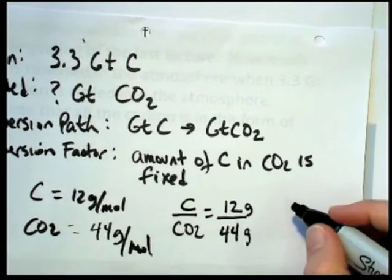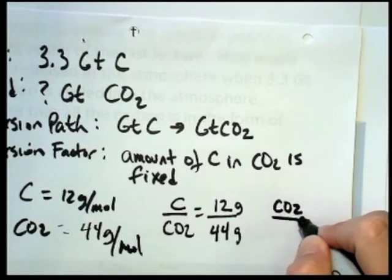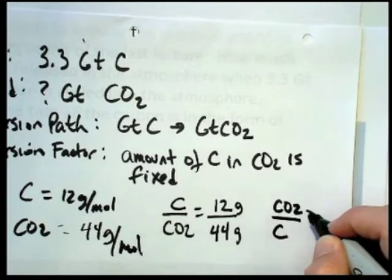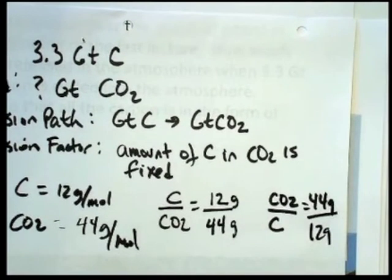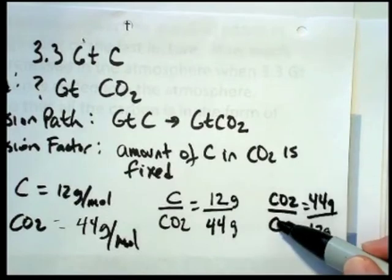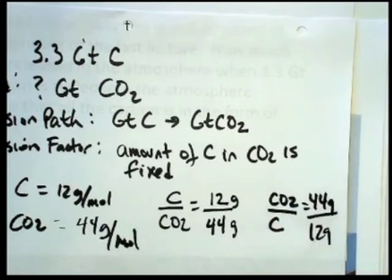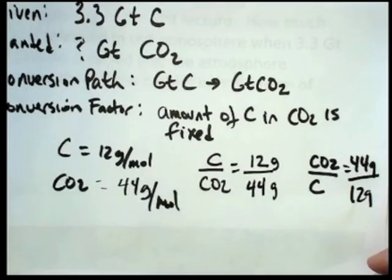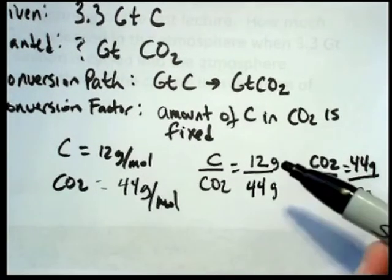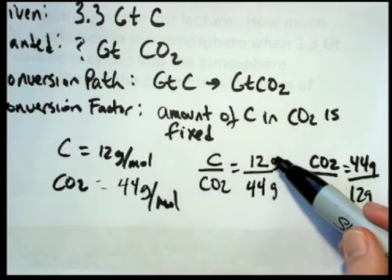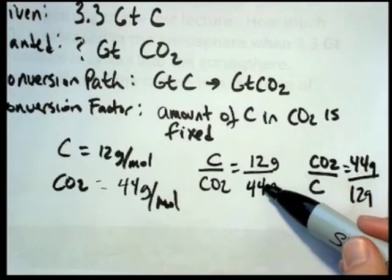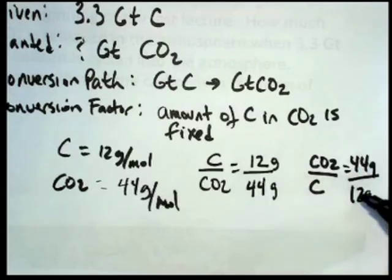So then I can make a ratio and say the ratio of carbon to carbon dioxide, the mass ratio is 12 to 44, 12 grams for every 44 grams, because the one moles would each cancel off. Or I could also write my ratio in terms of carbon dioxide per carbon, and that would be 44 grams per 12 grams. That's a mass ratio. It's always true because the amount of carbon in carbon dioxide is fixed. That's the definition of the pure substance, the pure compound.